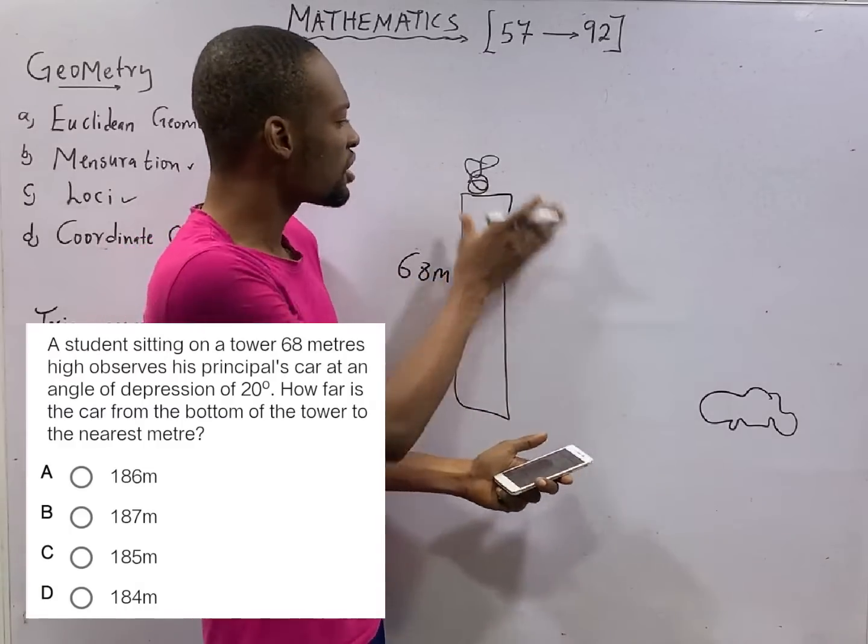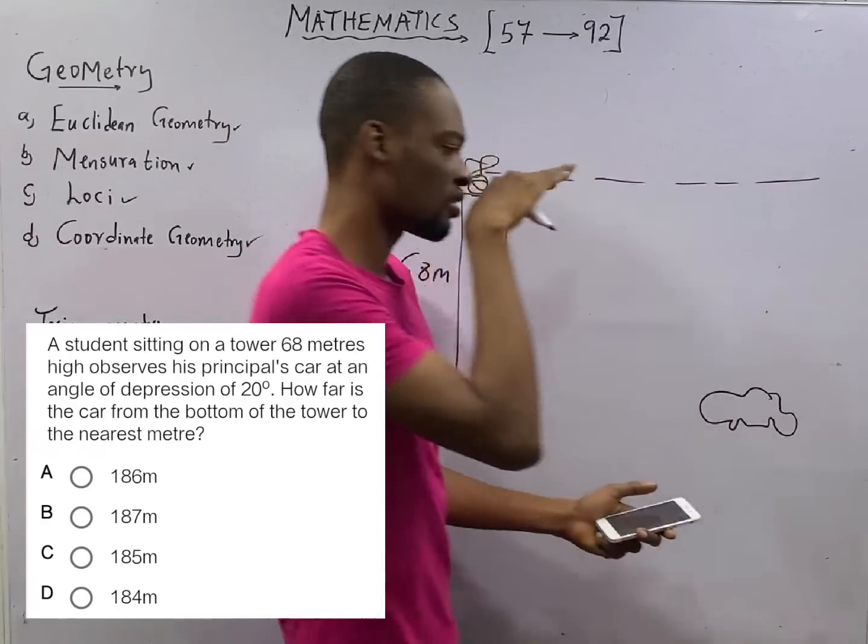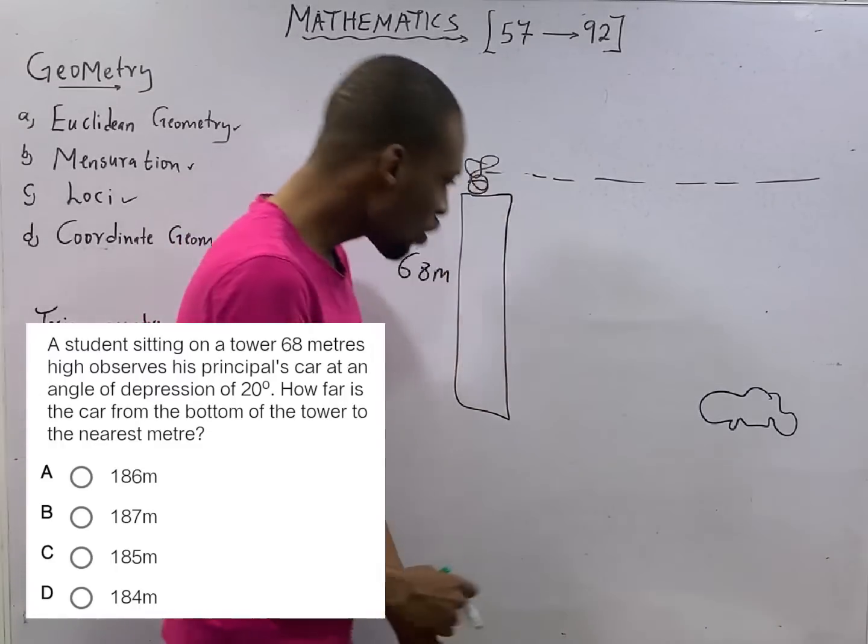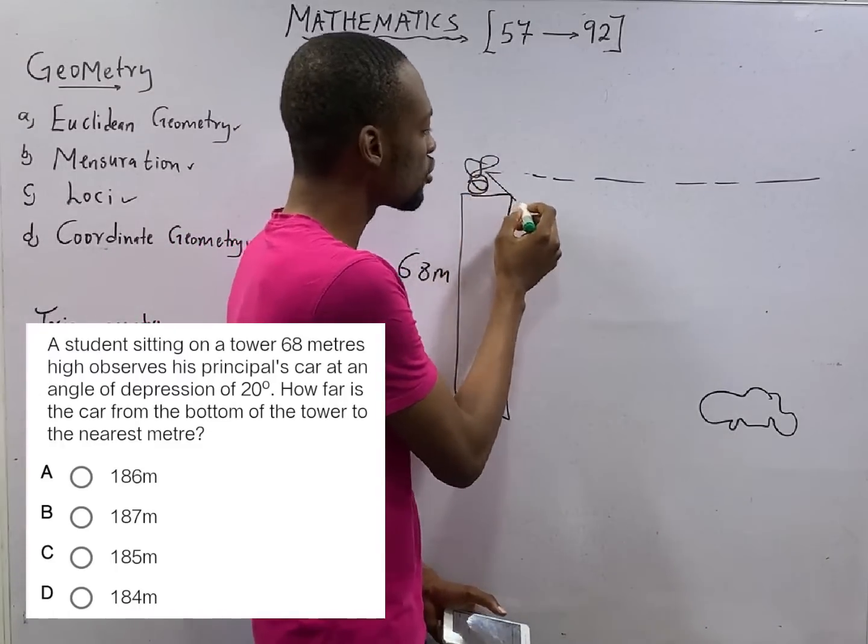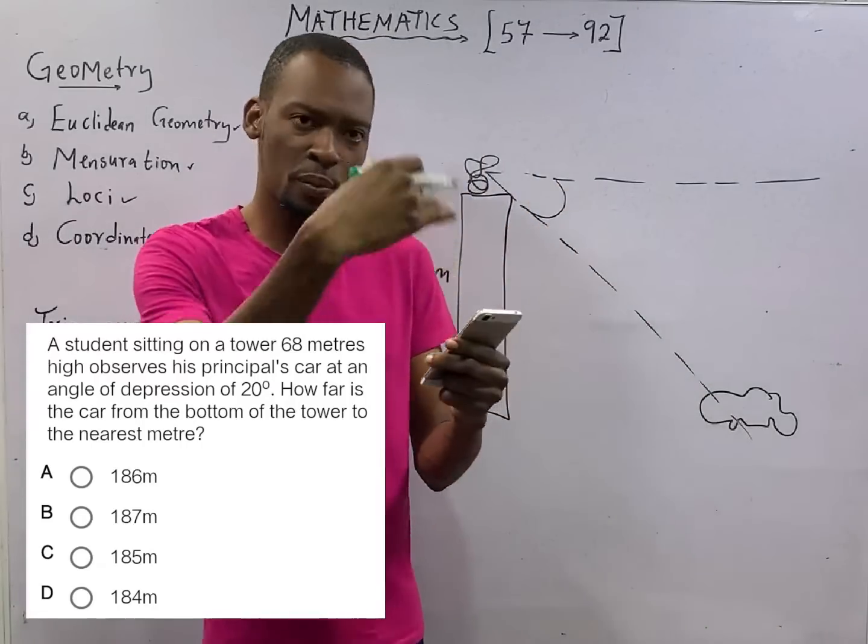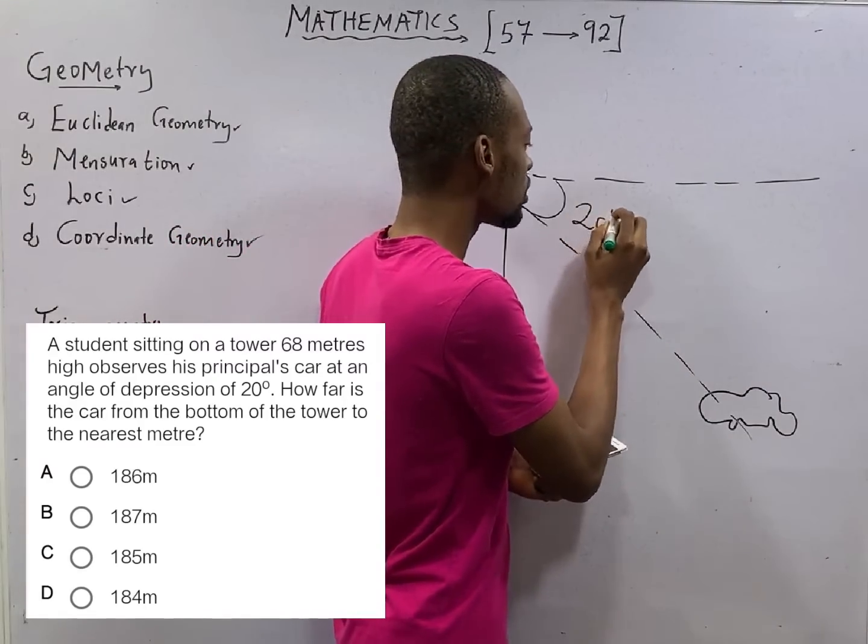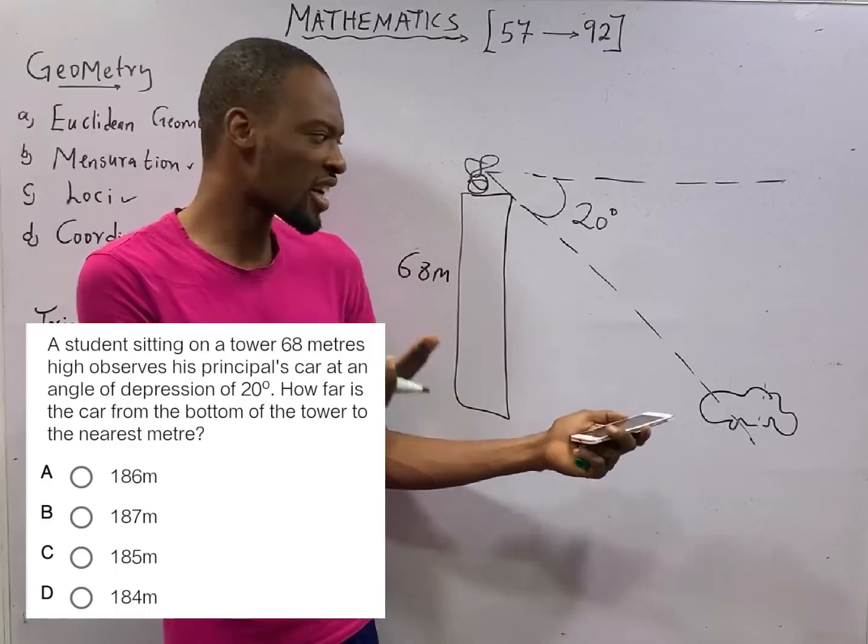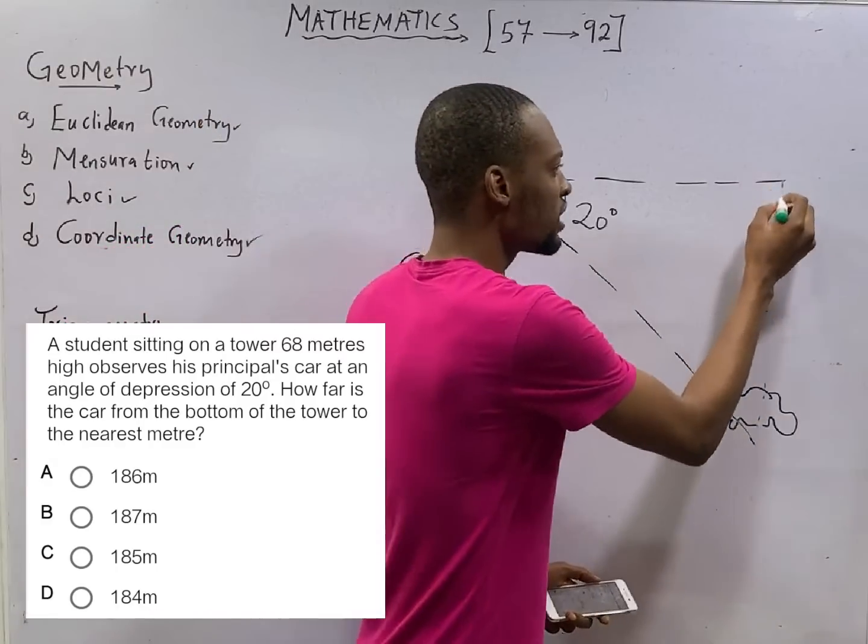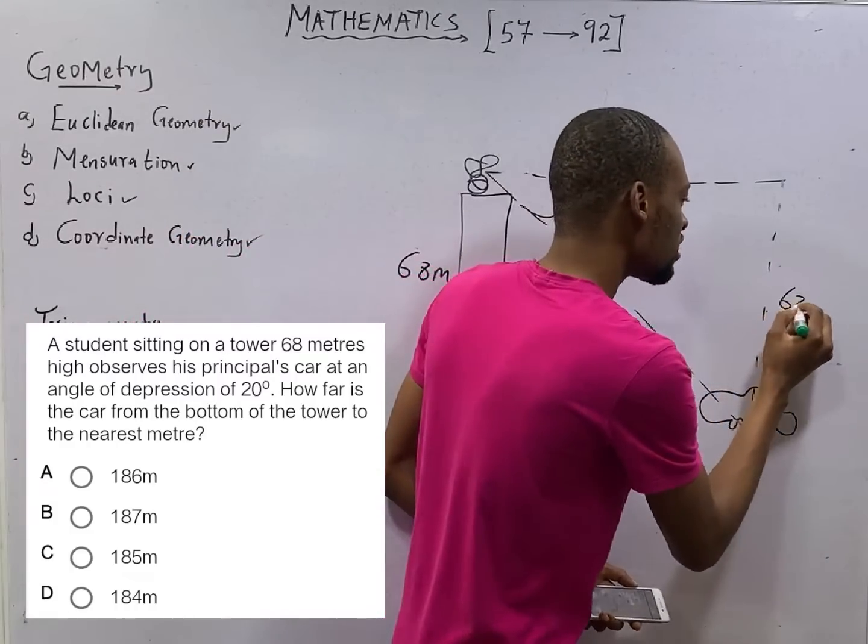So he observed the principal's car at an angle of depression, 20 degrees. This is the student. His normal eye view will be here, normal eye level. But looking down to the principal's car obviously means the angle has dropped like this. So this angle is the angle of depression because he is looking down and they said it is 20 degrees.